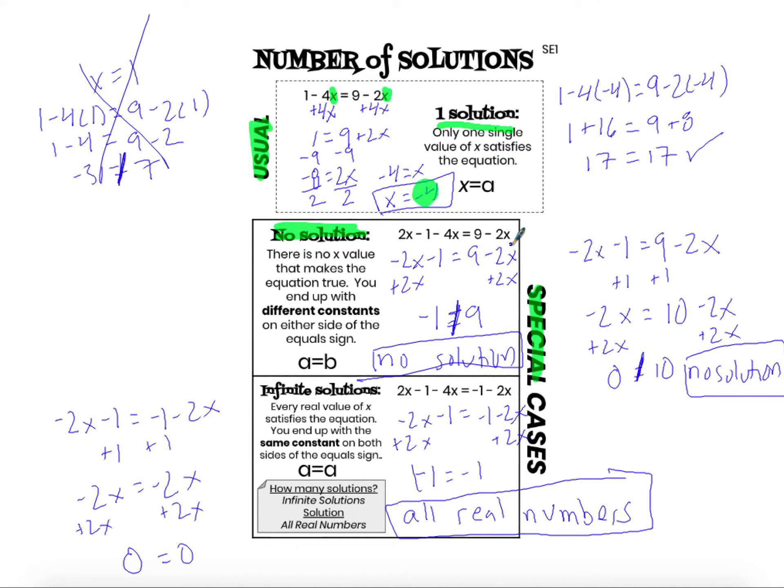If we're just asking you how many solutions, if the coefficients are not the same, like in this case, you can just say, hey, I know there is one solution. You don't have to actually find that solution. You know there's one solution because the coefficients are not the same. Again, special cases only occur when you have the same coefficient on both the left-hand side and the right-hand side of the equation.